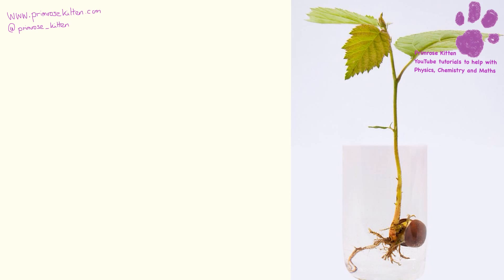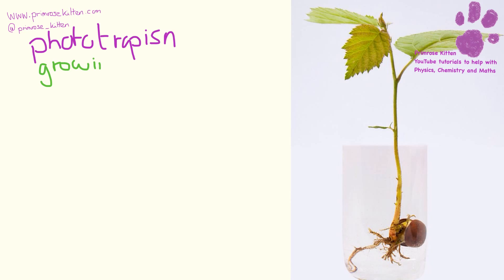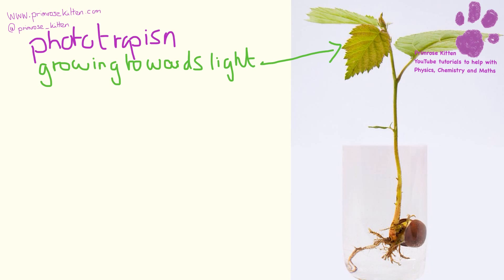So first of all, we have something called phototropism. Now phototropism just means growing towards light. It's going to be the shoots that grow towards light, because the leaves want to be up here. So the shoots — the top bit — are going to grow towards light, and they're also going to grow upwards.